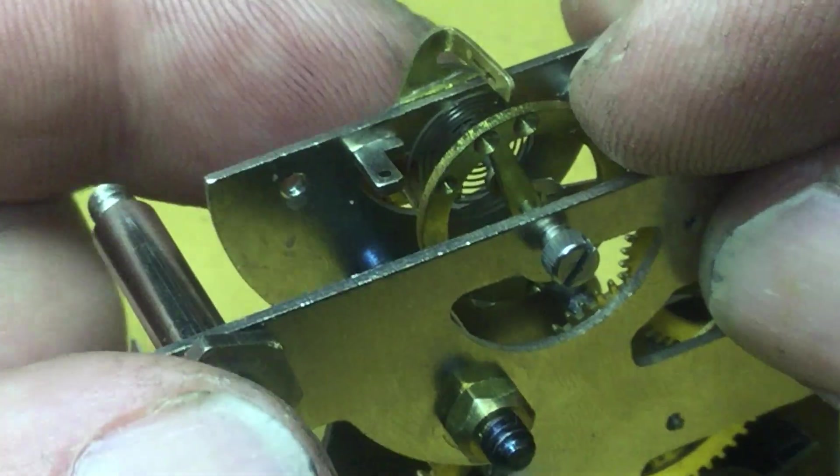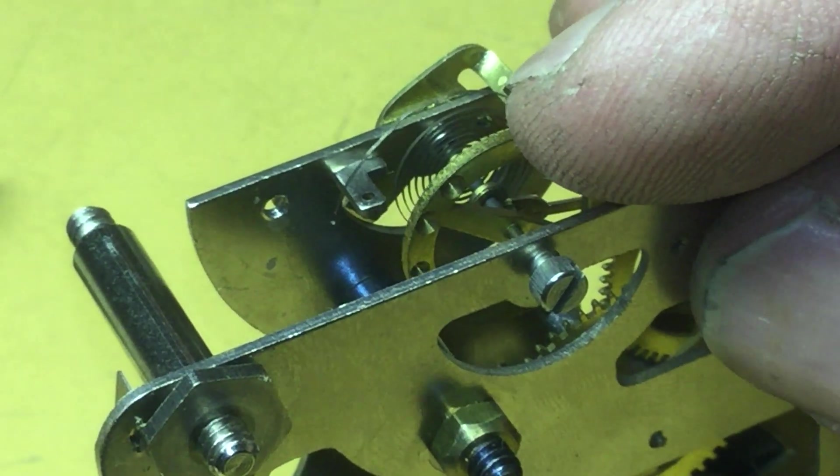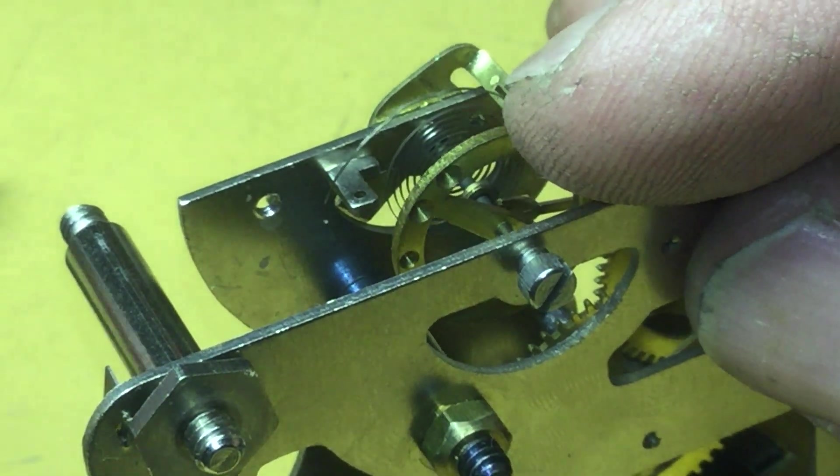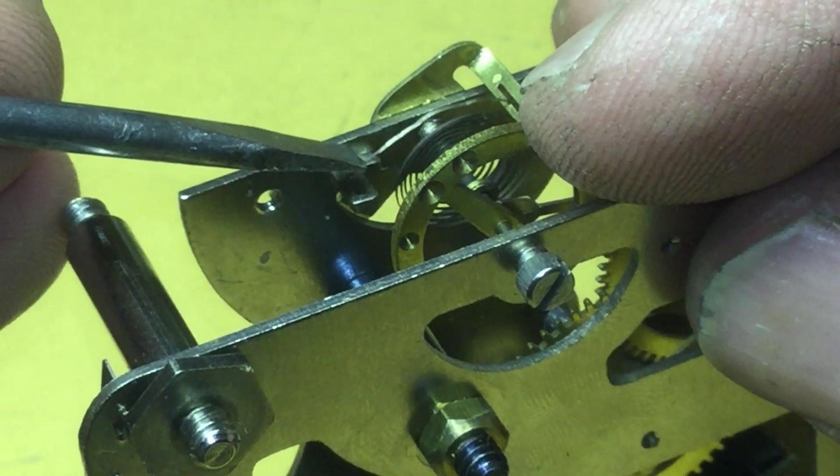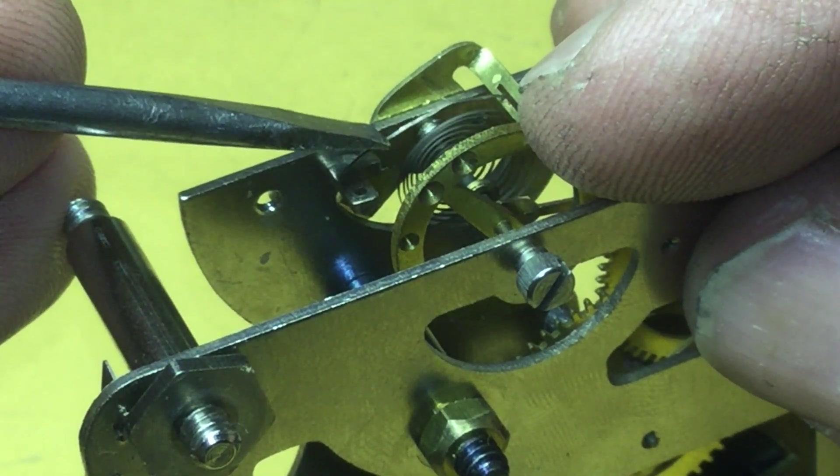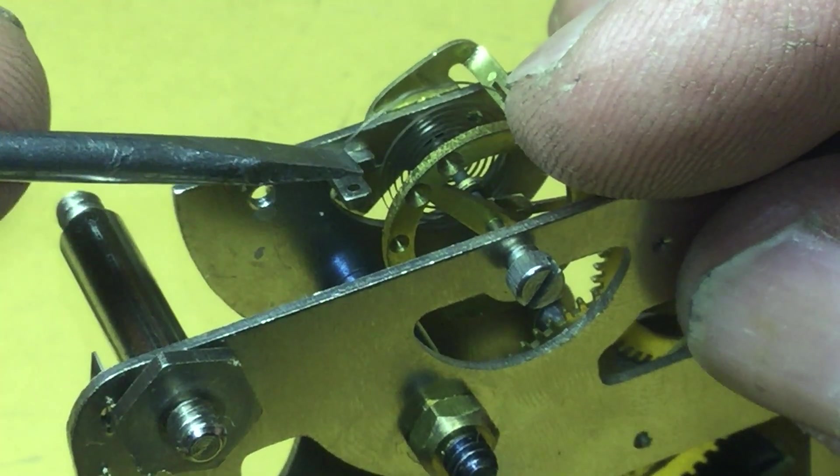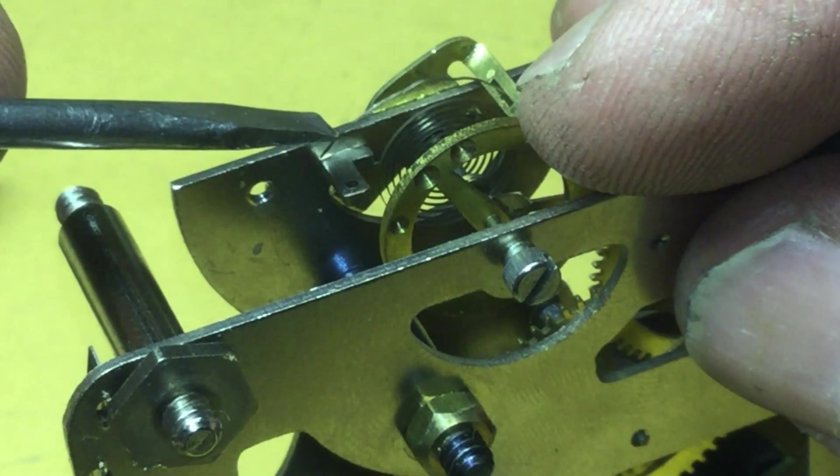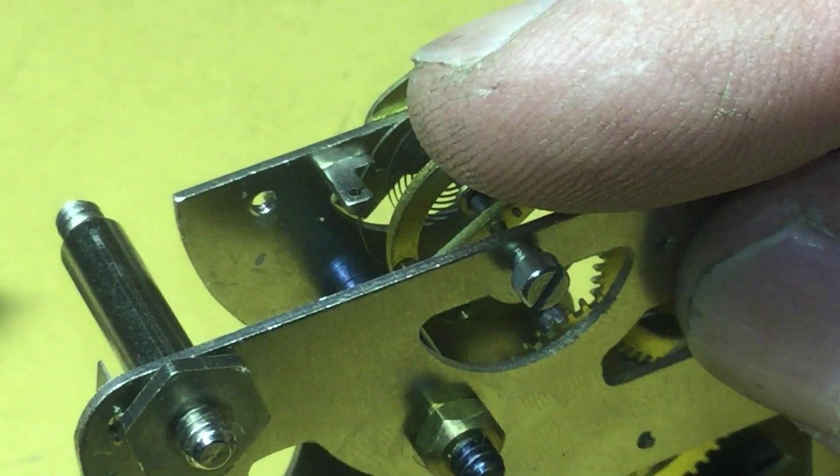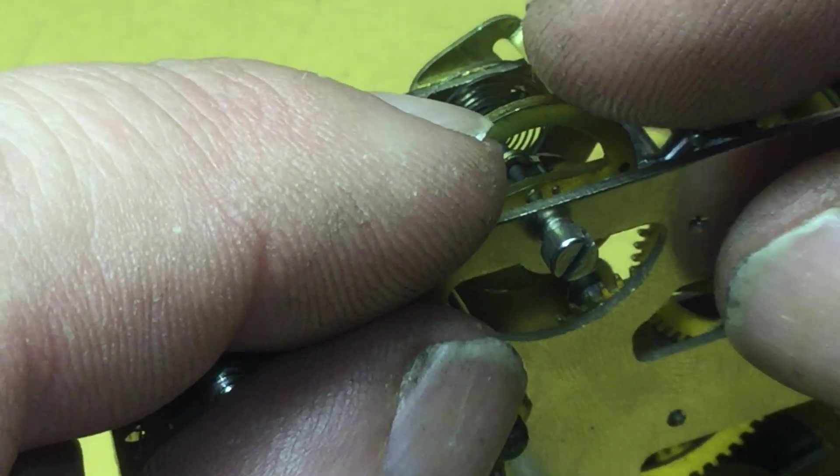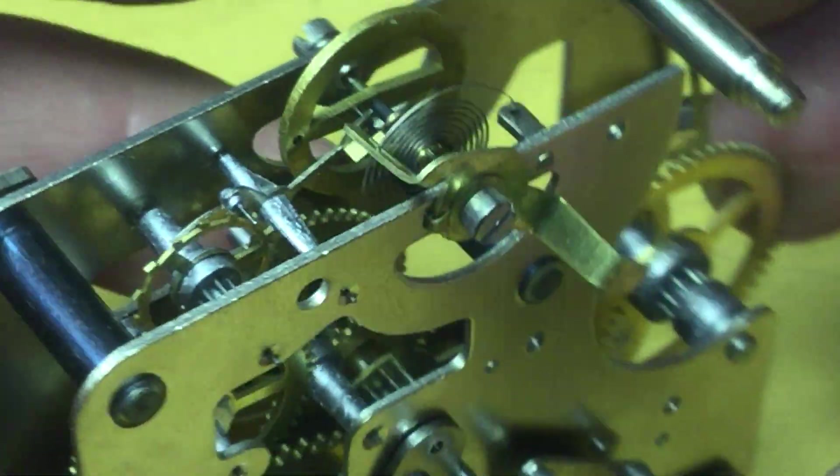Now let's go ahead and move this back over there out of the way. Now I want to get the hairspring in the hole of the stud there. Like that. Now we can set the beat.